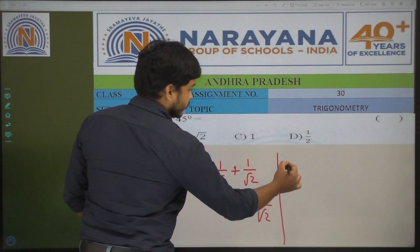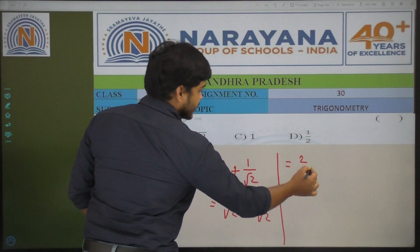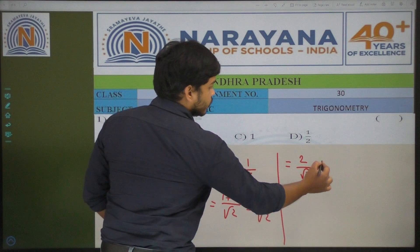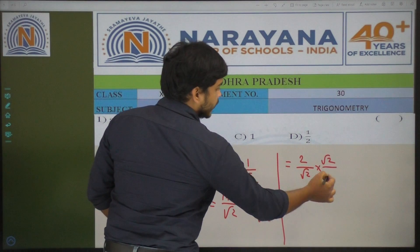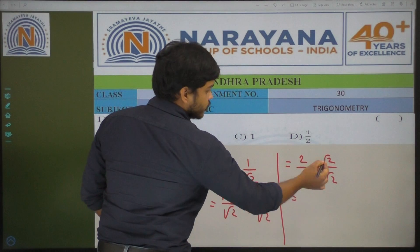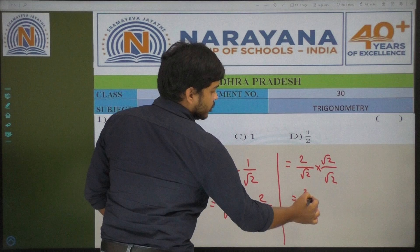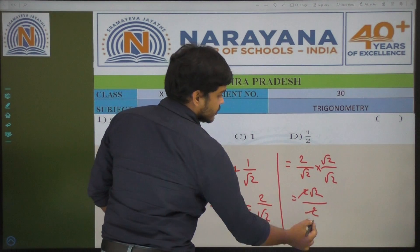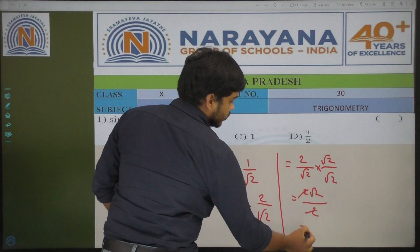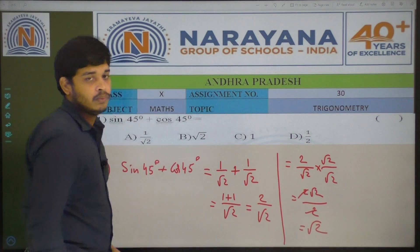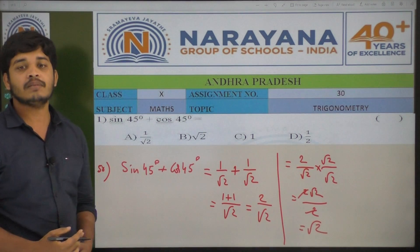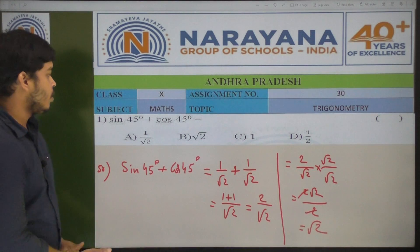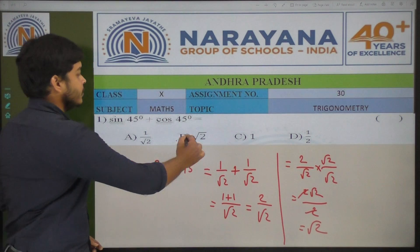Now I am rationalizing the denominator. So root 2 by root 2, which equals 2 into root 2, that is 2 root 2 by root 2 into root 2 which is 2. The 2s cancel, so the value is root 2. Therefore sin 45 degrees plus cos 45 degrees equals root 2, option B.